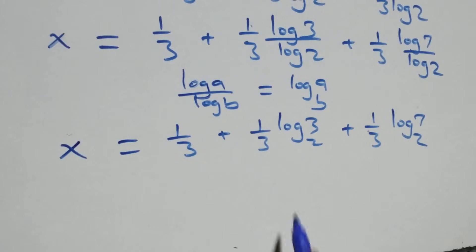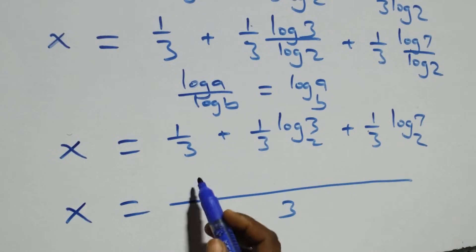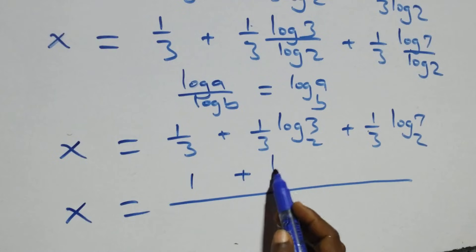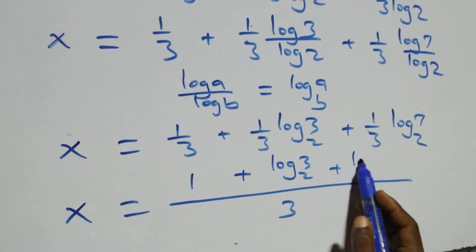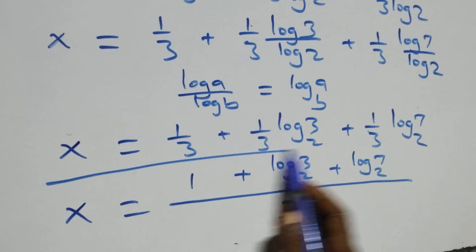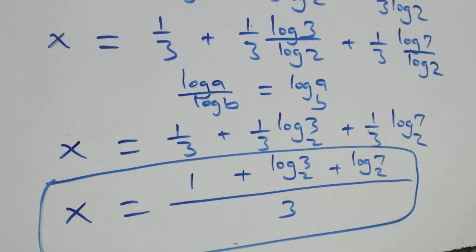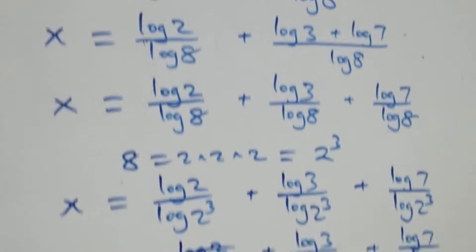Then, bringing this together as a fraction, we have x equals to 1 plus log 3 base 2 plus log 7 base 2, all over 3. That is the value of x. Let's check if this satisfies the given problem.